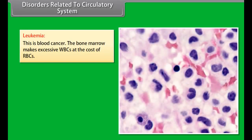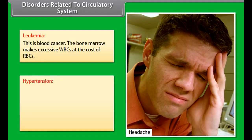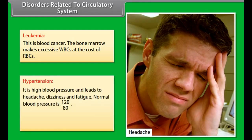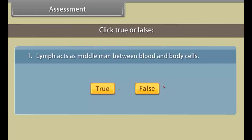Leukemia is blood cancer, in which the bone marrow makes excessive WBCs at the cost of RBCs. Hypertension is high blood pressure and leads to headache, dizziness and fatigue. Normal blood pressure is 120 over 80. High blood pressure is also caused by anxiety.